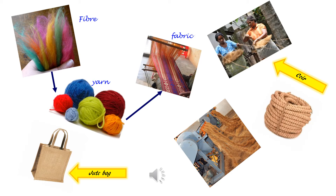You must have seen coconut fibers when your mom cooks. The fiber of coconut is called coir. These fibers are used to make strong, thick coir rope.